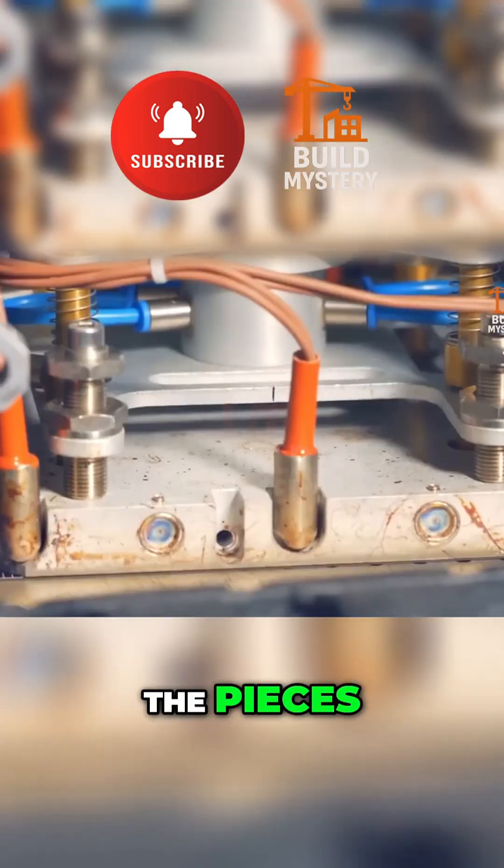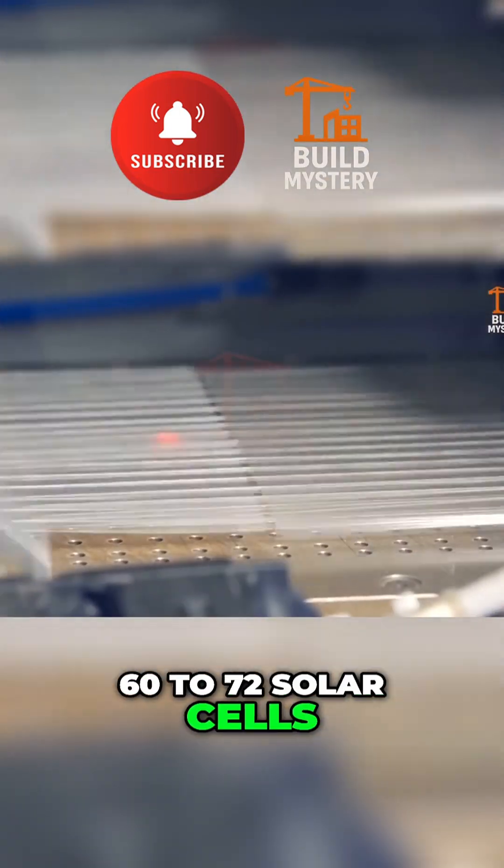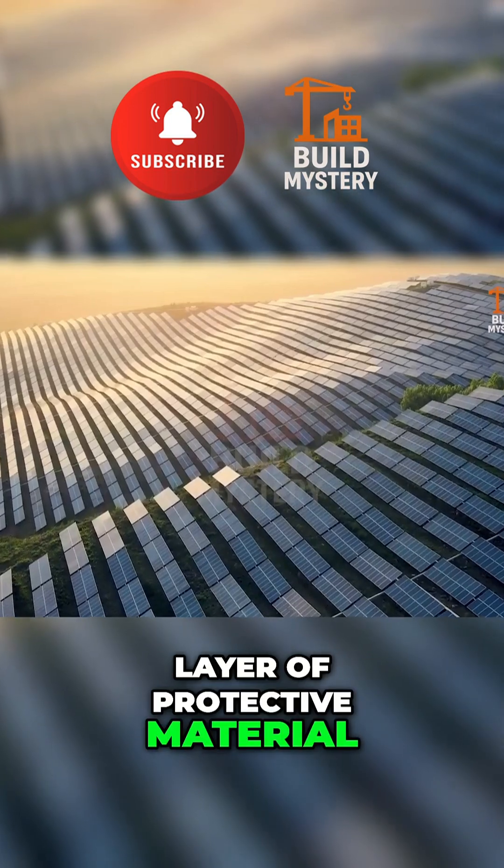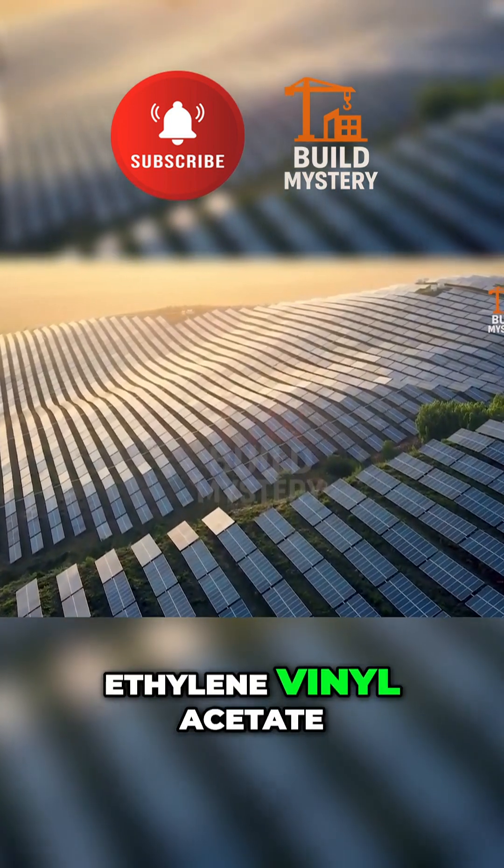Now it's time to assemble the pieces. Most solar panels contain 60 to 72 solar cells. They're connected in series and arranged on a layer of protective material, usually EVA, ethylene vinyl acetate.